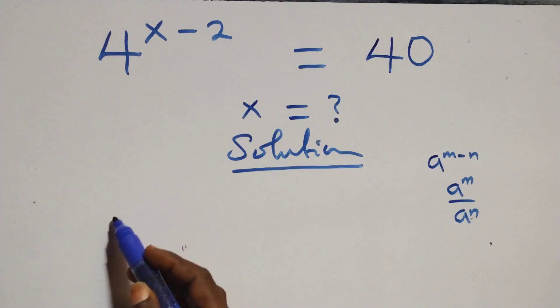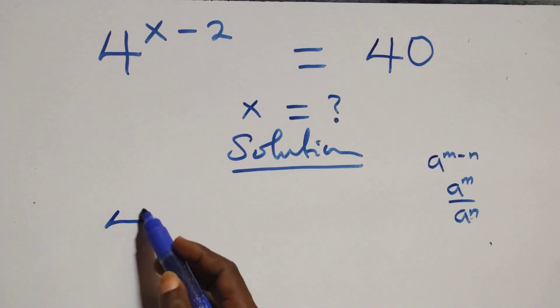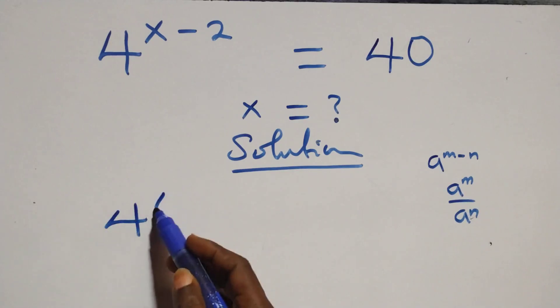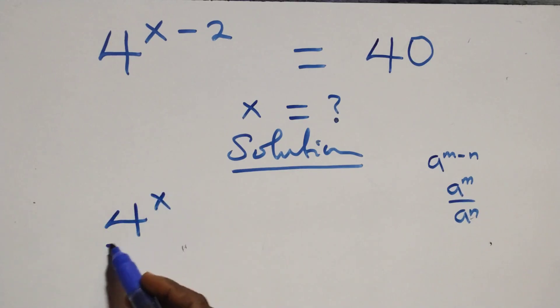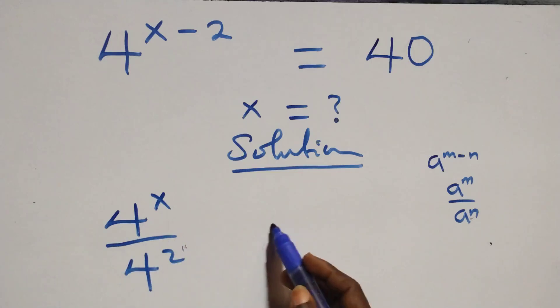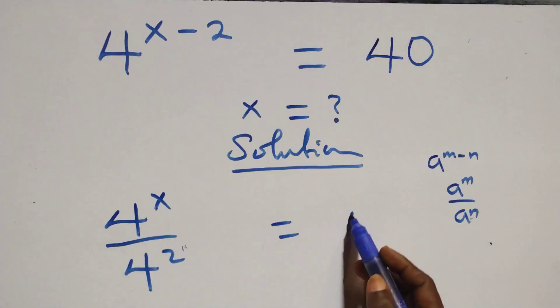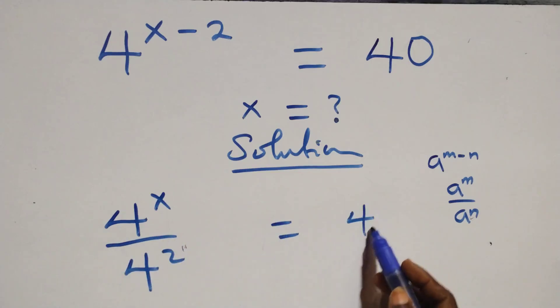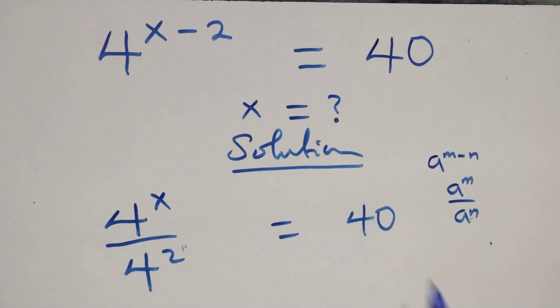At this here, we have 4 raised to power x over 4 squared equals to 40 on this side.